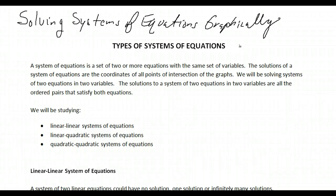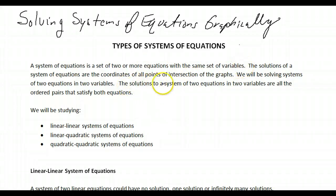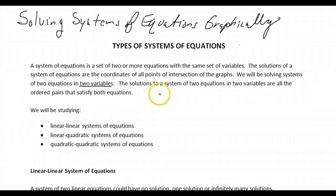This is Solving Systems of Equations Graphically, but first we're going through this worksheet on the types of systems of equations. A system of equations is a set of two or more equations with the same set of variables. The solutions are the coordinates of all points of intersections of the graphs. We will be solving systems in two variables — all ordered pairs that satisfy both equations.